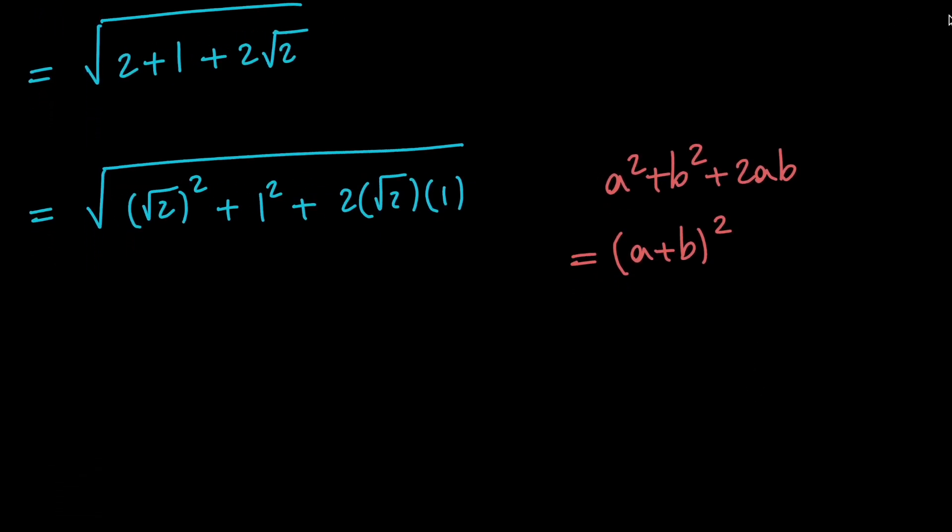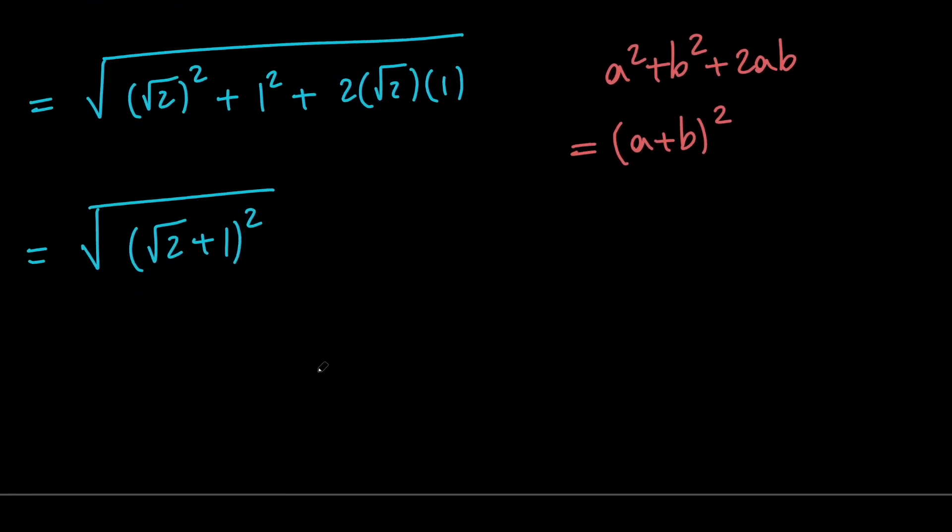So I can say that we have the square root of (√2 + 1)². And then since we have the square root of some expression squared, we're going to get the absolute value of that expression, which is |√2 + 1|. And since √2 + 1 is positive, we get √2 + 1.